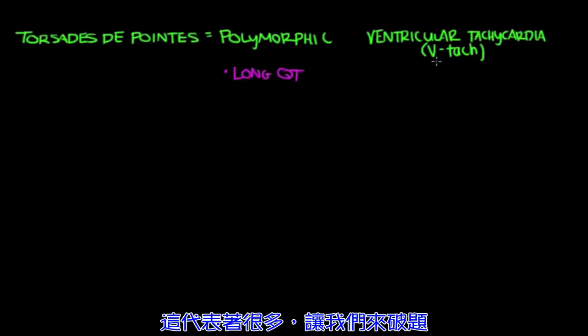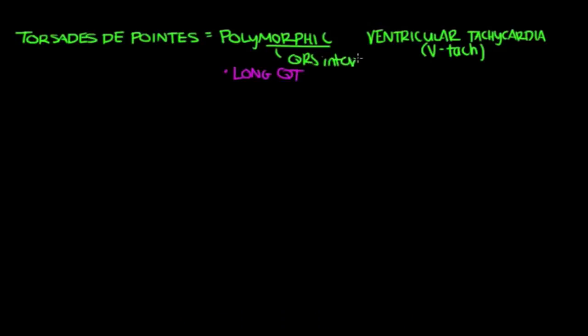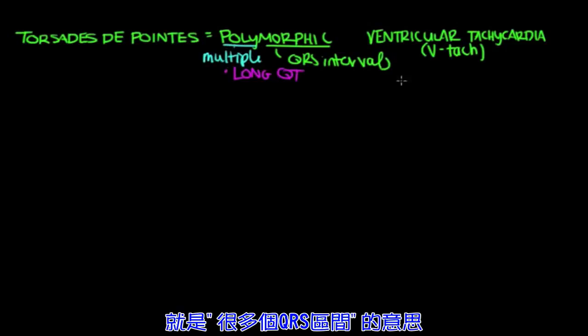What does all that mean? Well, this is a lot to swallow, so let's break this down. Morphic refers to the QRS intervals, and poly just implies that there are multiple. There are multiple QRS intervals.